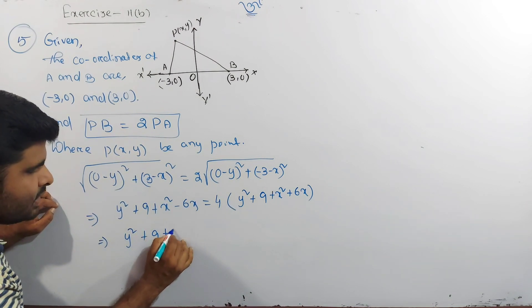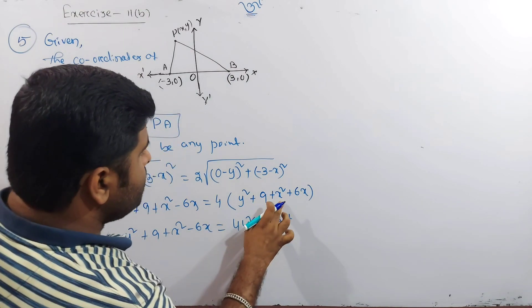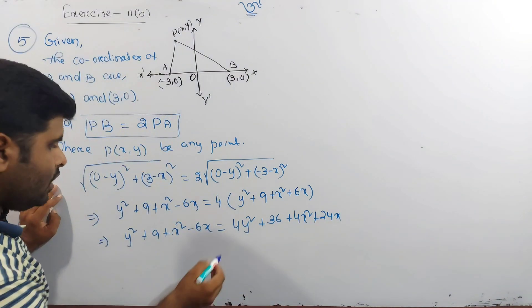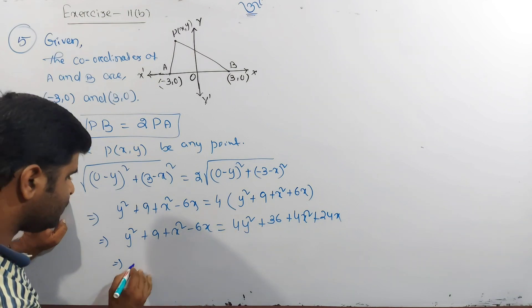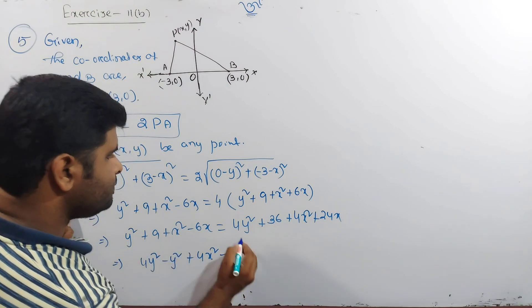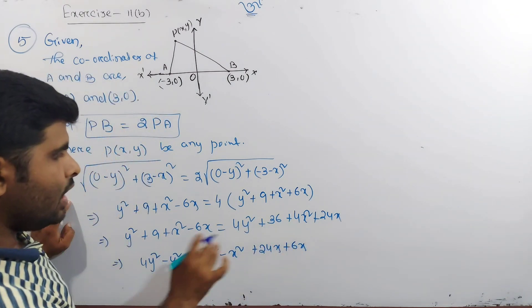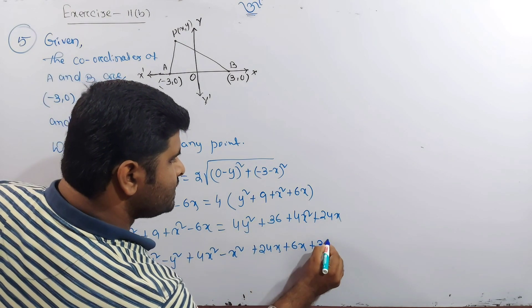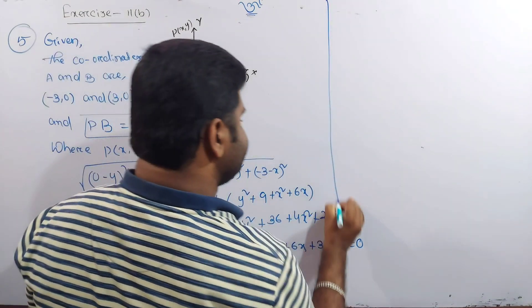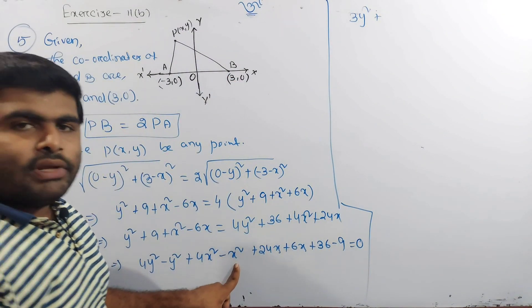Expanding: y² + 9 + x² + 6x = 4y² + 36 + 4x² − 24x. Rearranging: 4y² − y² + 4x² − x² + 24x + 6x + 36 − 9 = 0, giving 3y² + 3x² + 30x + 27 = 0.